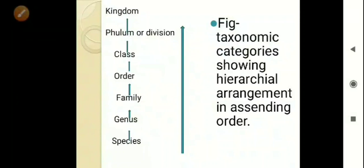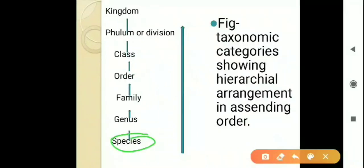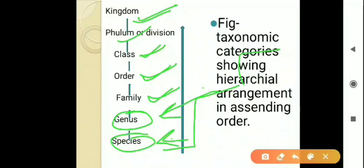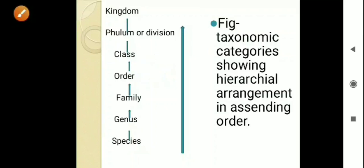We have given a particular name to each classification unit or rank. The lowest rank is called species, then genus, then family, then order, then class, then phylum, and then kingdom. These ranks — rank 1 is species, rank 2 is genus, rank 3 is family, rank 4 is order, then class, then phylum, then kingdom.